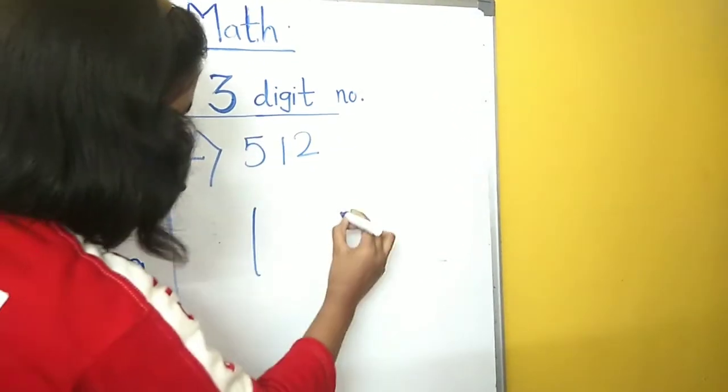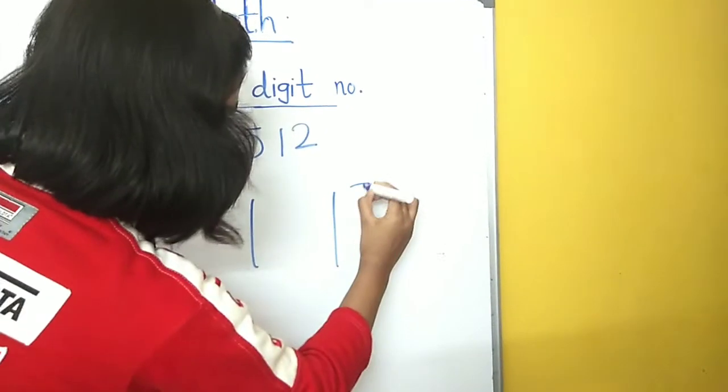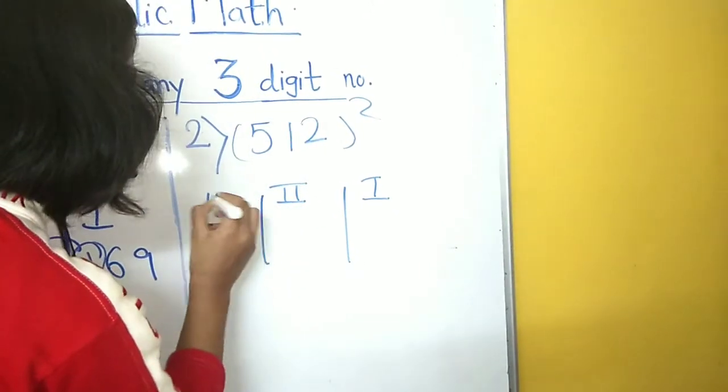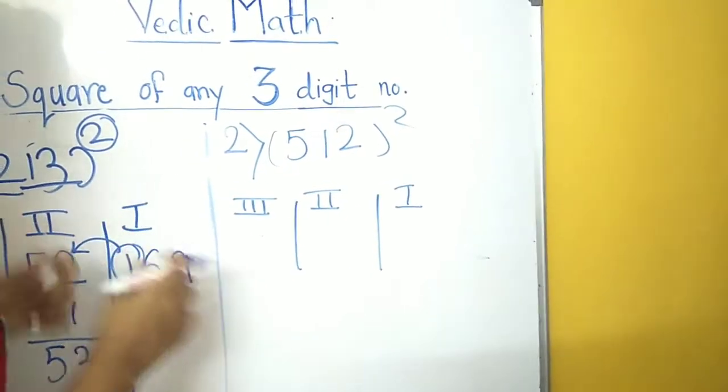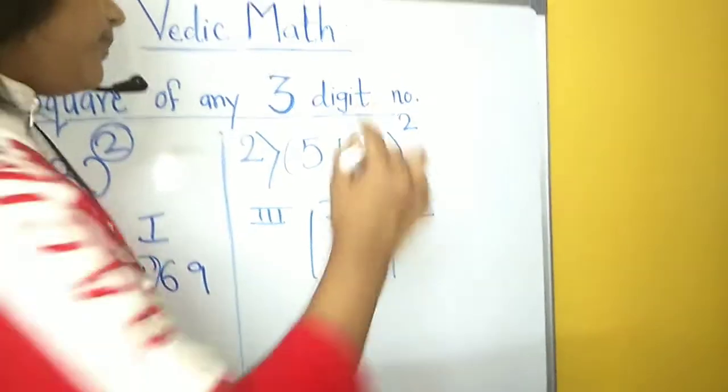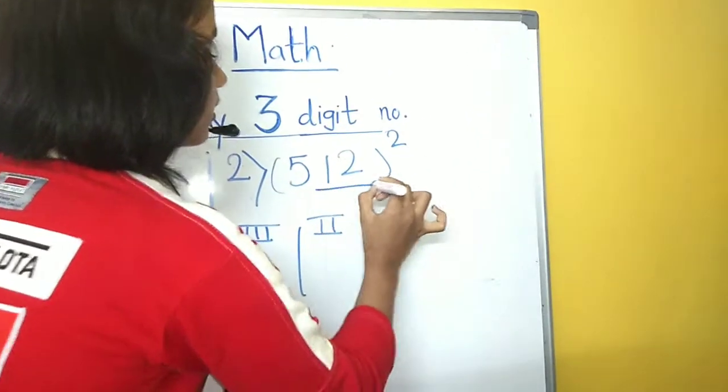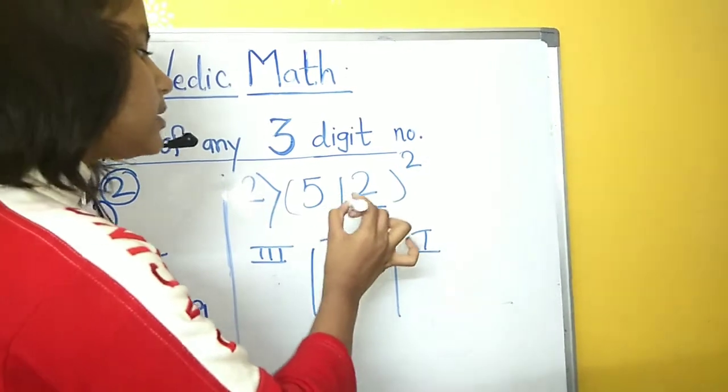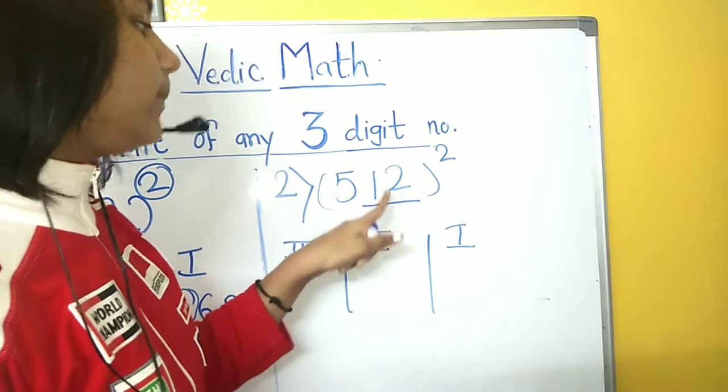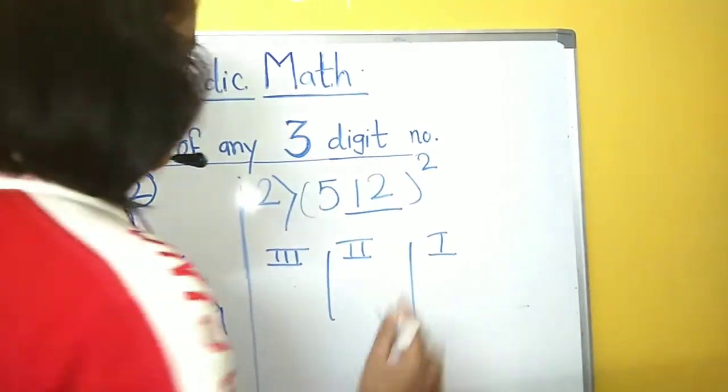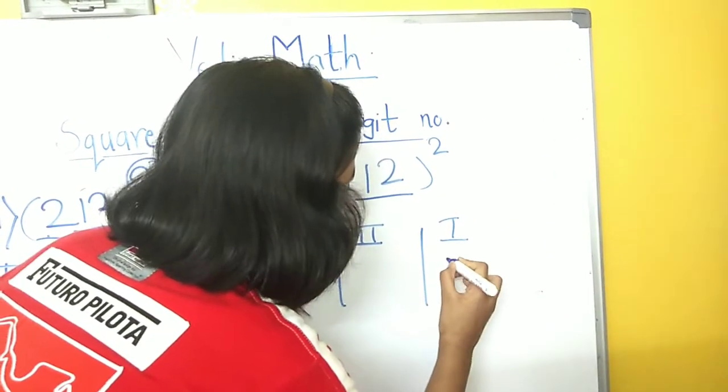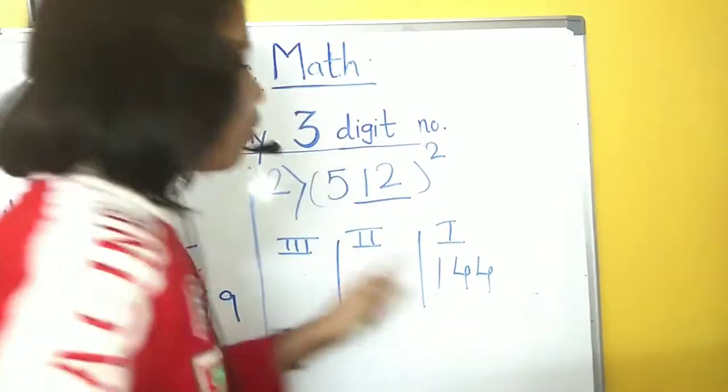So, we have to solve it in three steps. First step, second step, and the third step. In the first step, we will square the number in the two digits in the end, which means we will square 12. Because the two numbers over here present are 1 and 2, which is 12. So, now let's square the number 12. The square of the number 12 is 1, 4, 4, means 144.